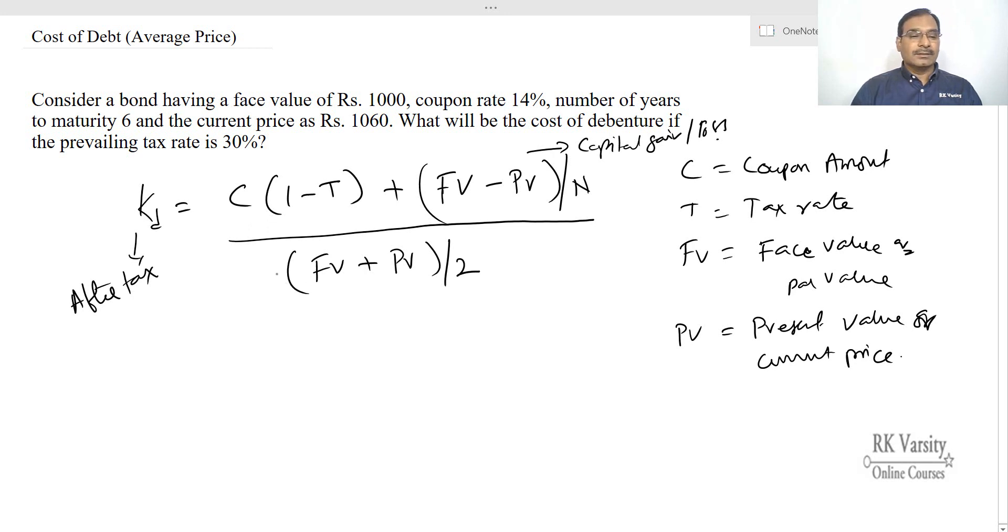Now in the given example, consider a bond having a face value of 1000 with a coupon rate of 14 percent. So coupon amount is face value of the bond—that is rupees 1000 times coupon rate 14 percent, 0.14—so this is rupee 140 as the coupon amount.